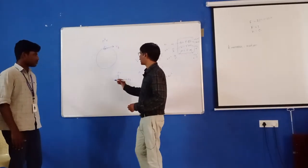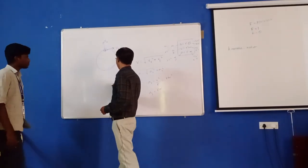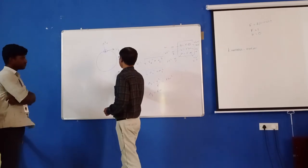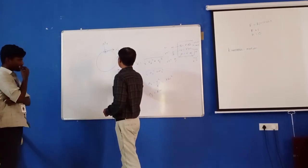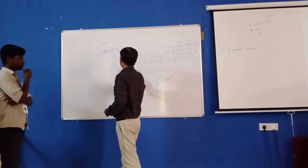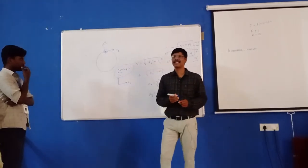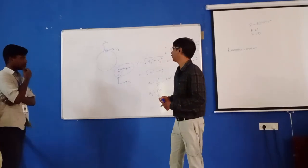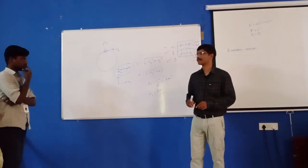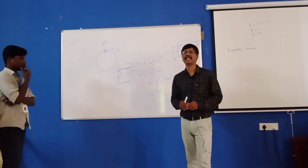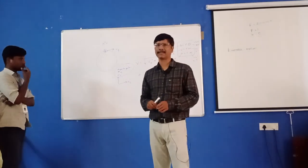The radial acceleration is also called normal acceleration or centripetal acceleration. It has three names: normal, radial, and centripetal are the same. These are the types of acceleration and the types of velocity.